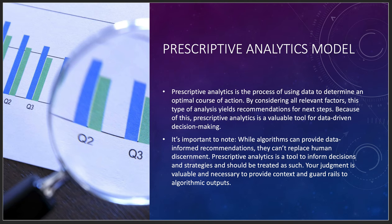In the prescriptive analytics model, it's the process of using data to determine an optimal course of action. If Philadelphia had said school lunch quality was the big problem, they'd have gone in the wrong direction. By considering all 259 relevant factors, this type of analysis yields recommendations for next steps. It's a really good tool for data-driven decision making, and I've used these tools for at least the last decade in academic administration.